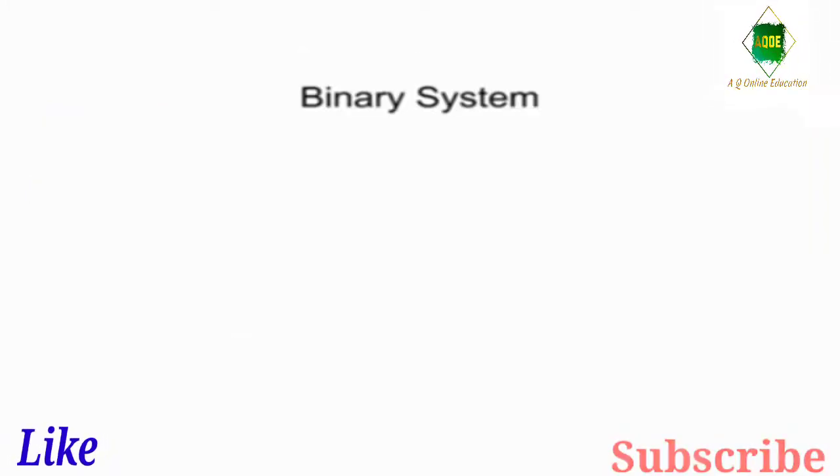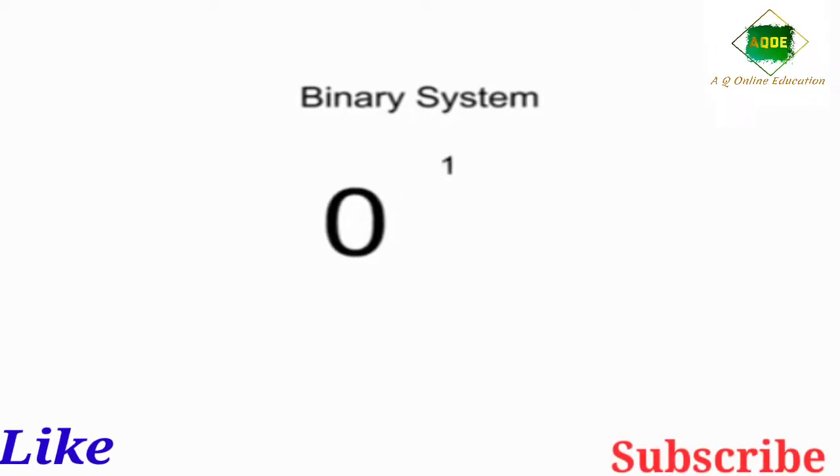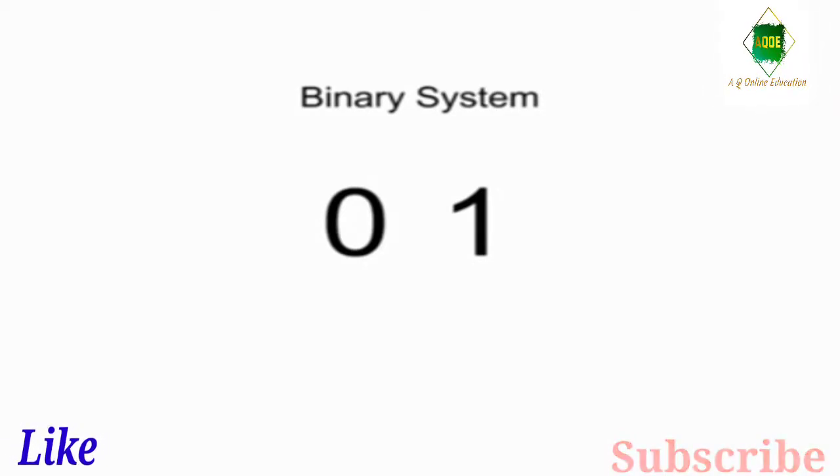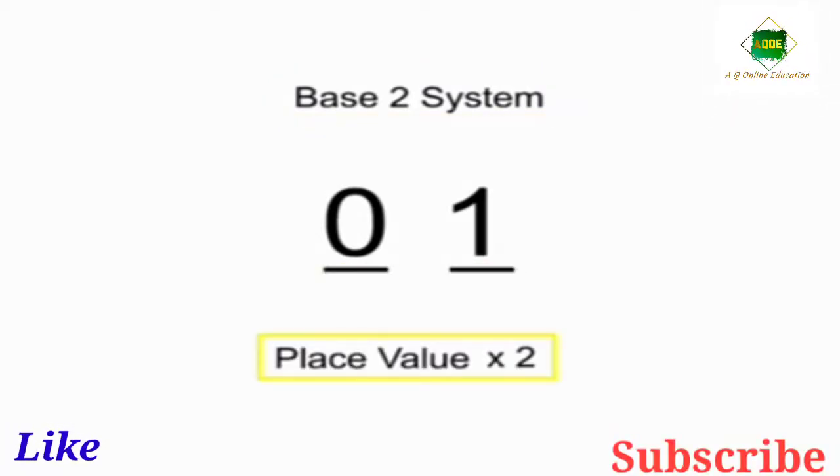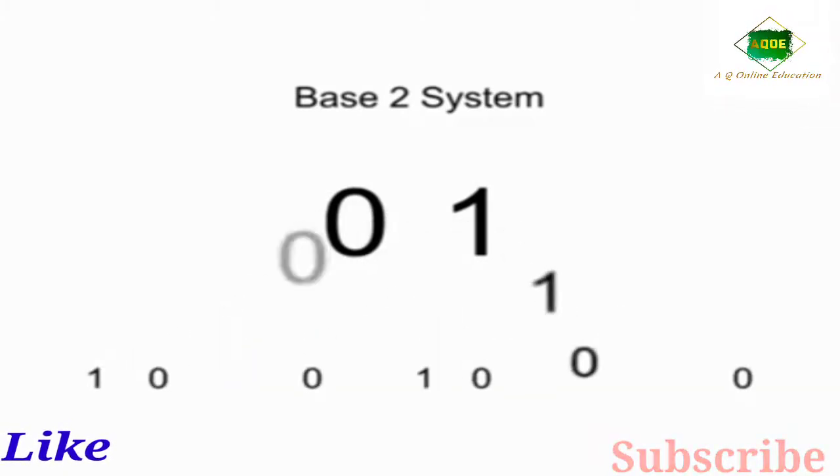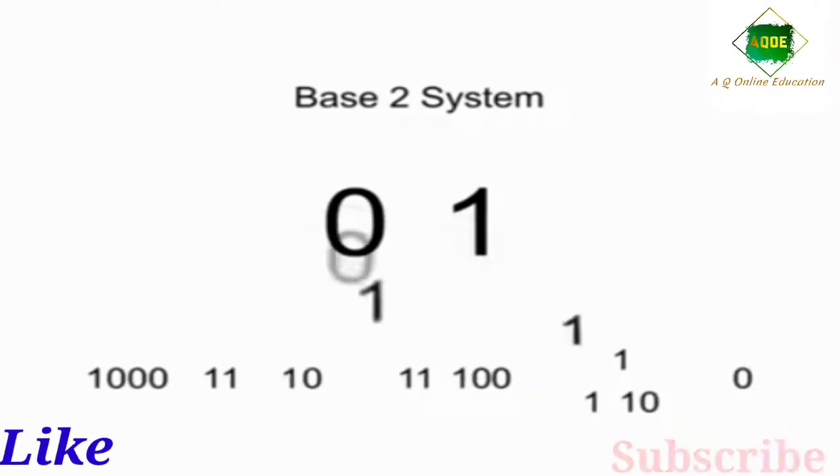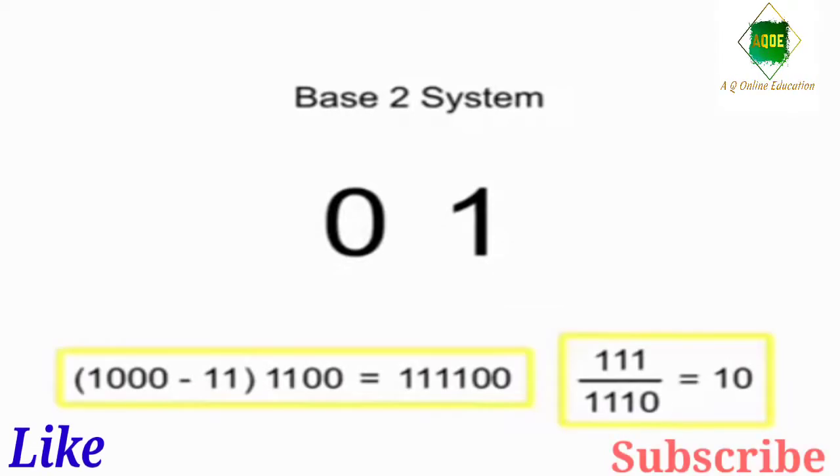The binary system also uses place value to determine the magnitude of a number, but uses only 0 and 1 as numeric symbols. Thus, it is referred to as the base 2 system with each position incremented by a multiple of 2. Digital systems use the base 2 system for computational operations in many of its applications.